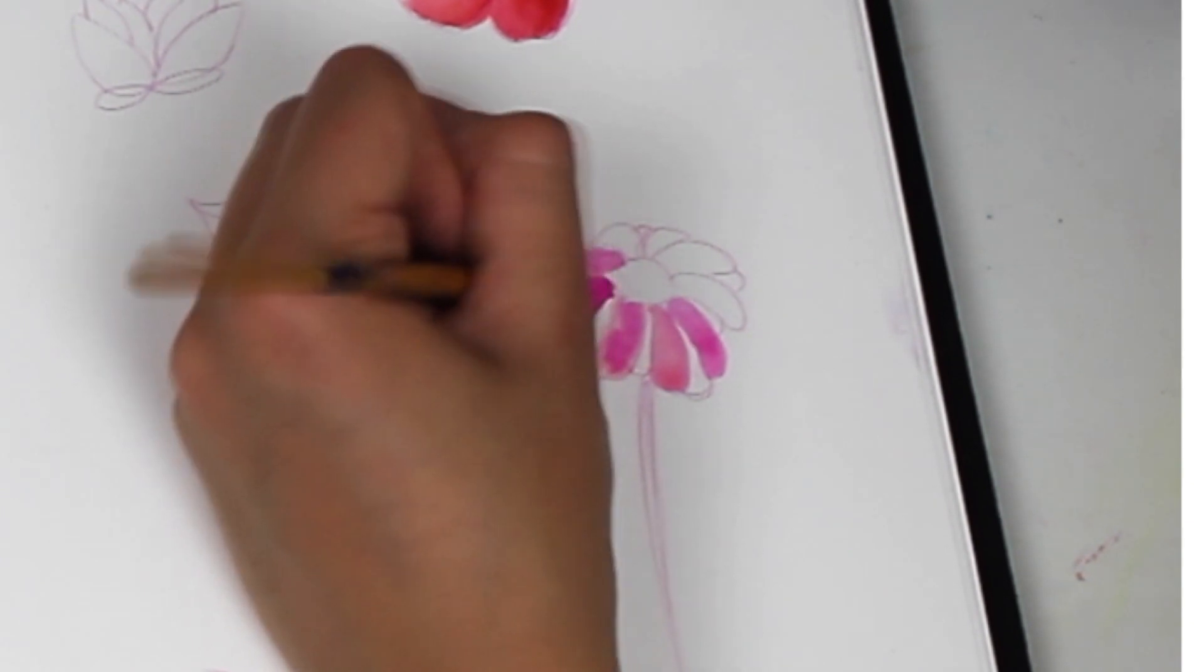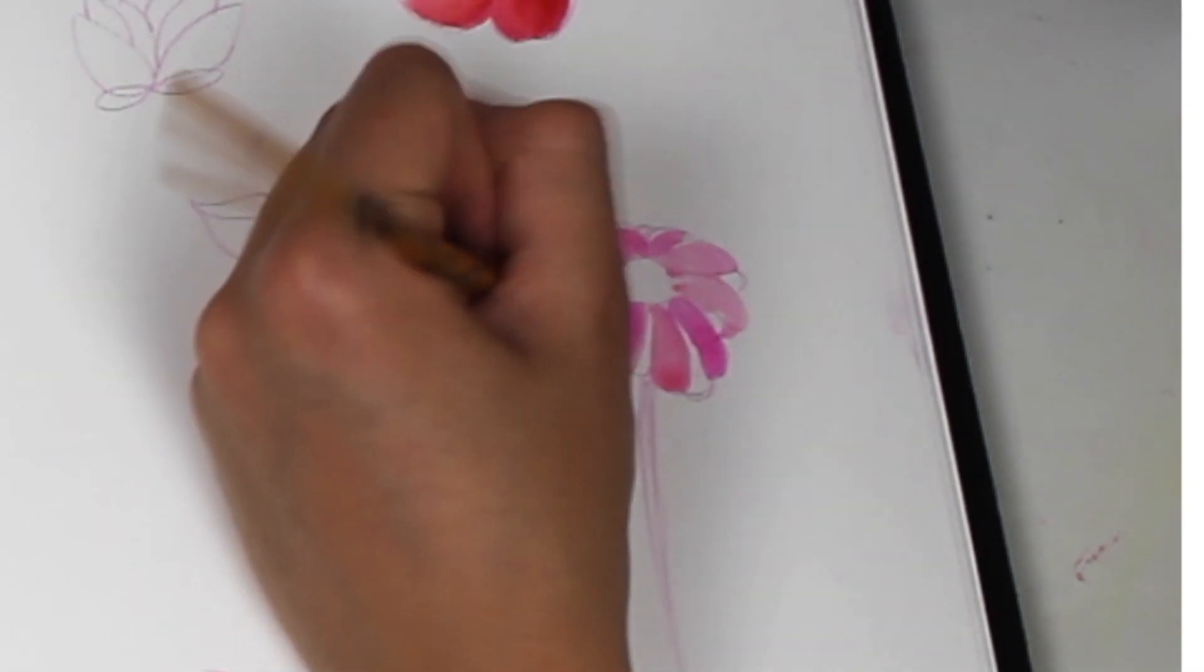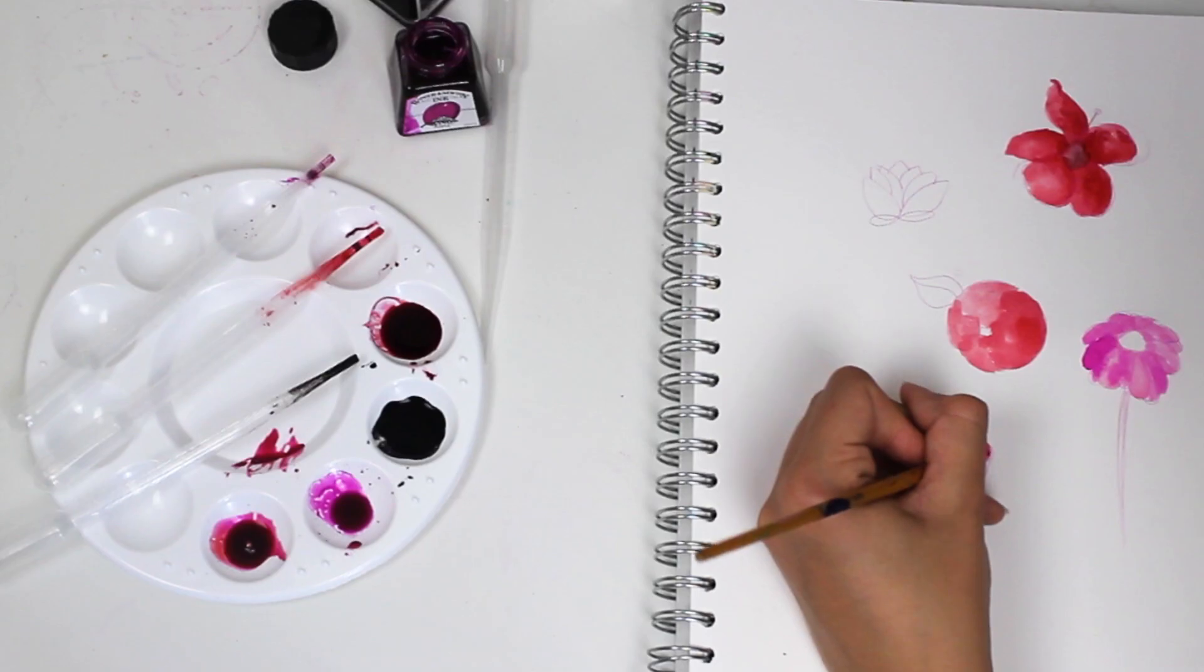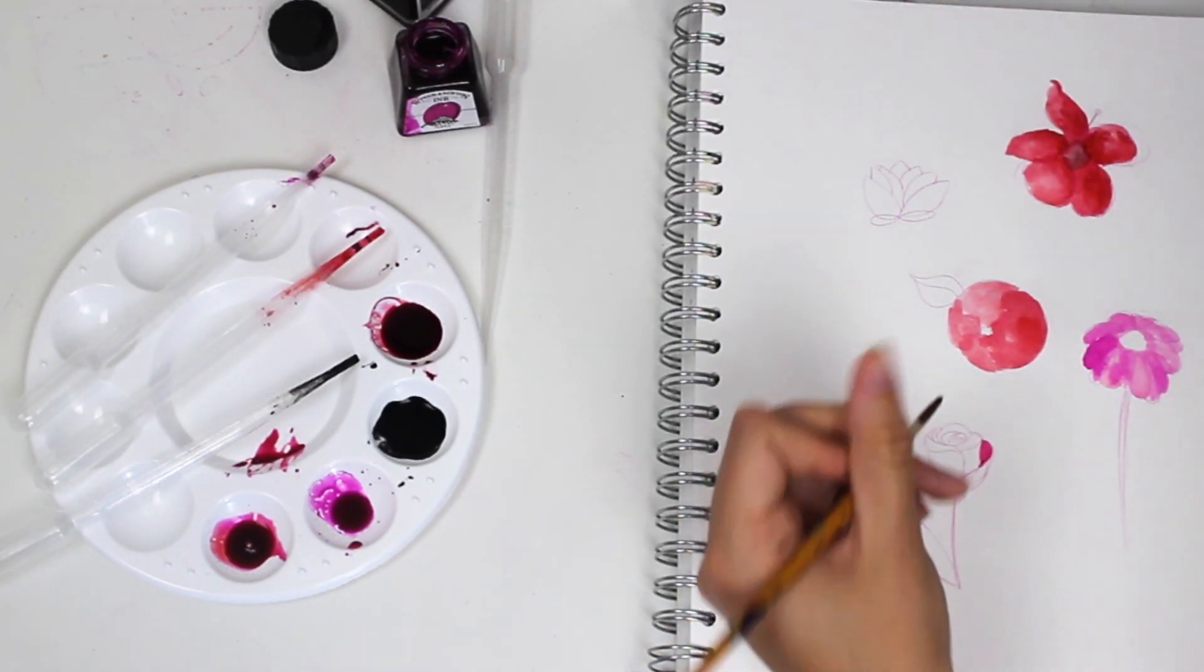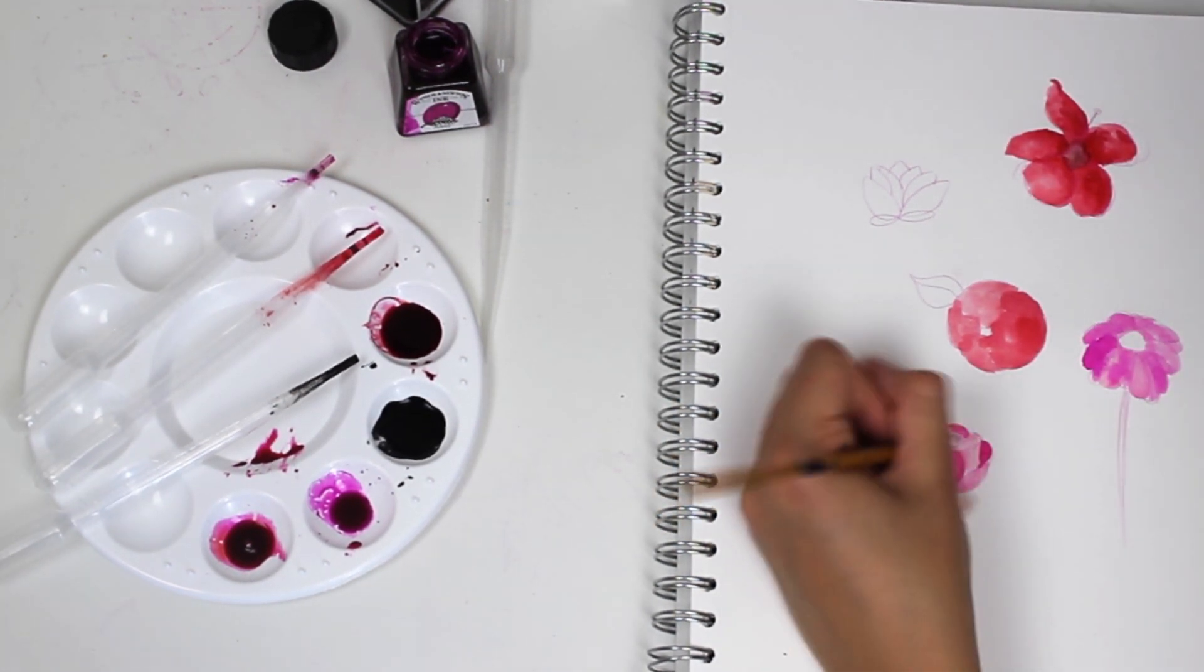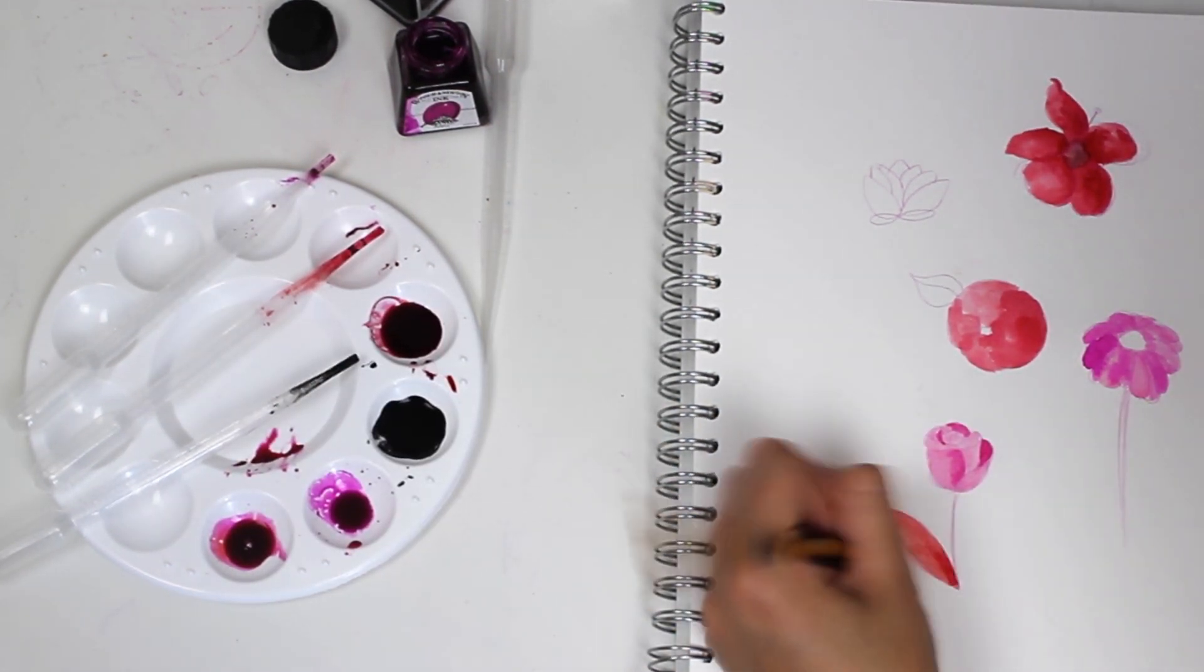I started off by doing a couple of flower doodles to color in before I moved into doing a more finalized piece. I played around with different ways to apply the ink—I used a wet brush, water in the ink, and a dry brush to see how it worked best for me and how I could change the vibrancy of the colors.